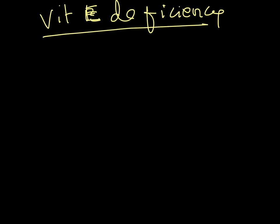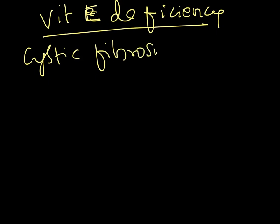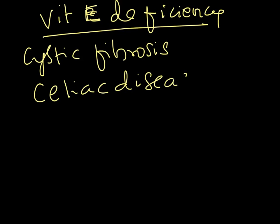Vitamin E deficiency can be caused by cystic fibrosis, which leads to malabsorption of lipids and thereby deficiency of fat-soluble vitamins A, D, E, and K. Celiac disease can also cause vitamin E deficiency through the same mechanism of lipid malabsorption.